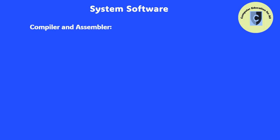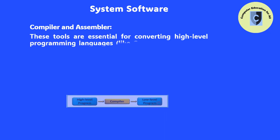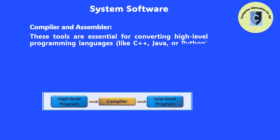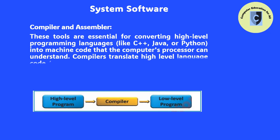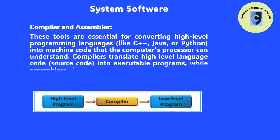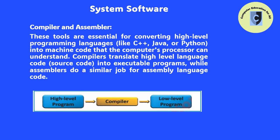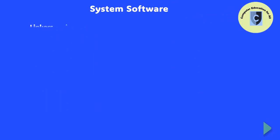Compiler and Assembler: These tools are essential for converting high-level programming languages, like C++, Java, or Python, into machine code that the computer's processor can understand. Compilers translate high-level language code (source code) into executable programs, while assemblers do a similar job for assembly language code.